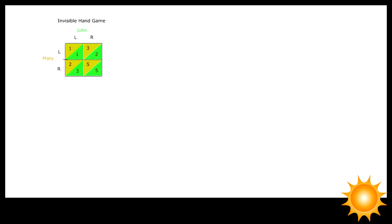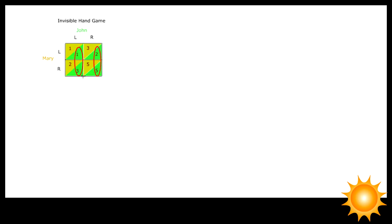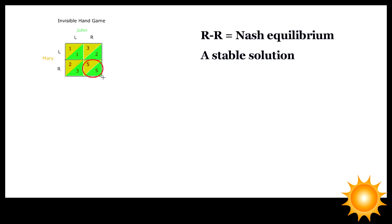For Mary, the payoff for choosing R is always greater than the payoff for choosing L. In other words, R is the dominant strategy, and R-R is a stable solution from which nobody has any incentive to defect. It is technically known as a Nash equilibrium.